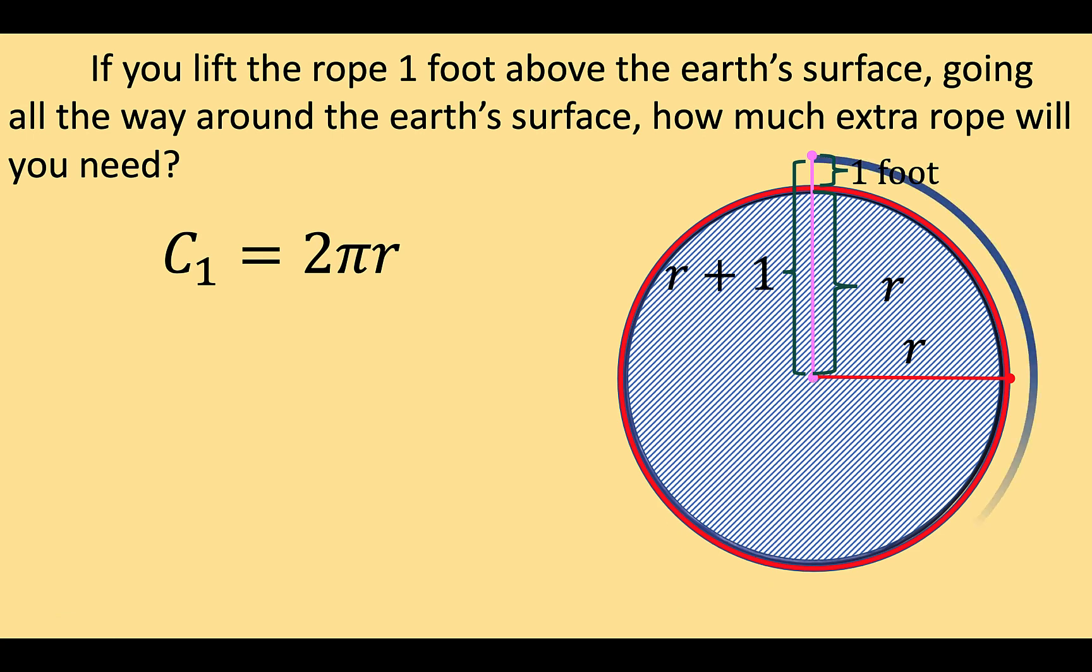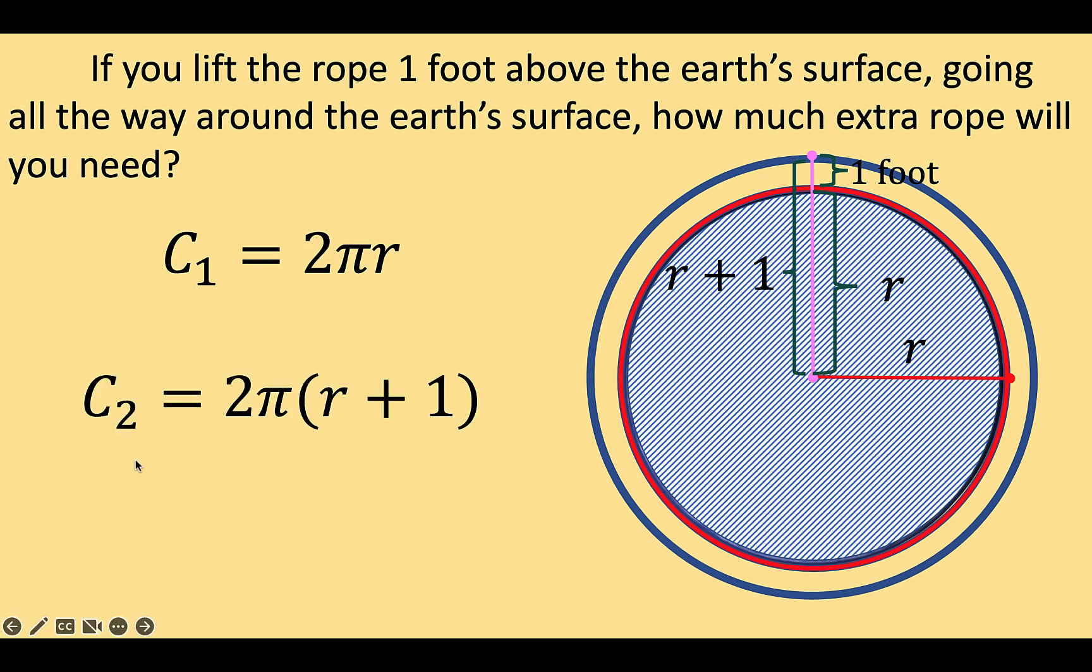Then let's draw a circle that is one foot above the Earth's surface going all the way around. Now the circumference of the blue circle would still be computed using the formula 2πR, only that this radius is now increased by one foot. So the radius now becomes R plus one.